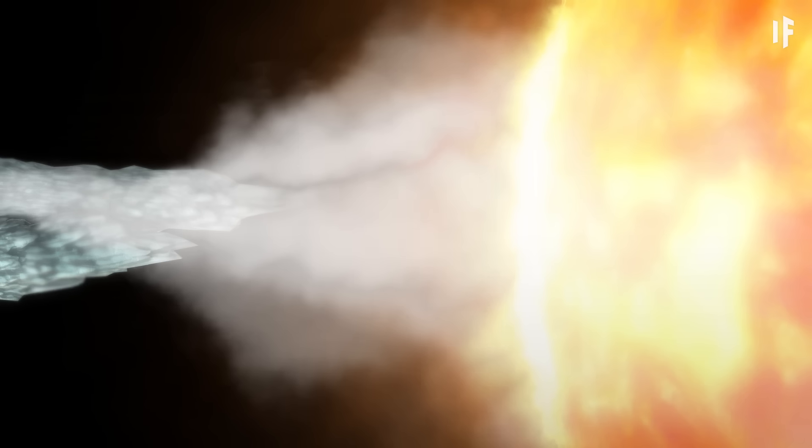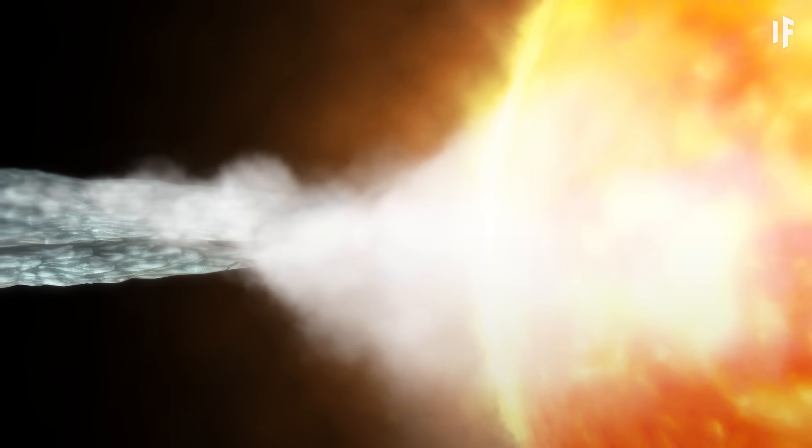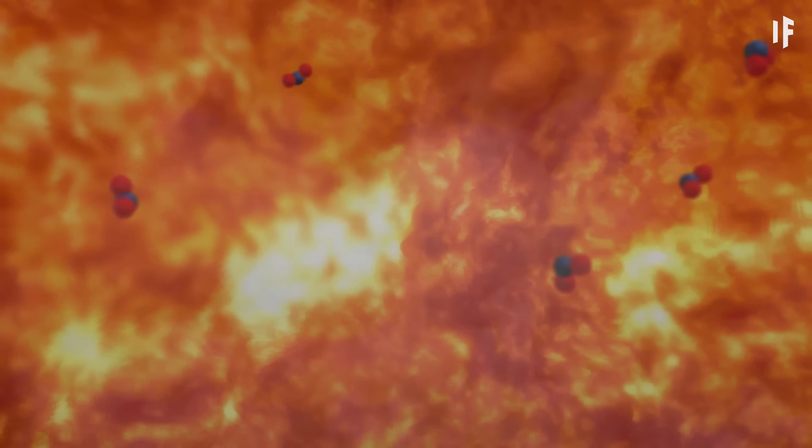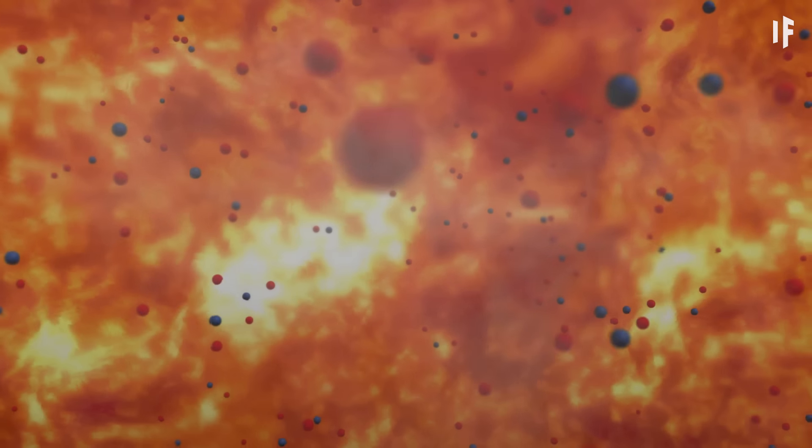The ice would continue shooting towards the Sun, but it would face mass evaporation as soon as it hit the star's atmosphere. The water vapor would then break down to its basic ingredients, oxygen and hydrogen. And that's when something interesting would happen.